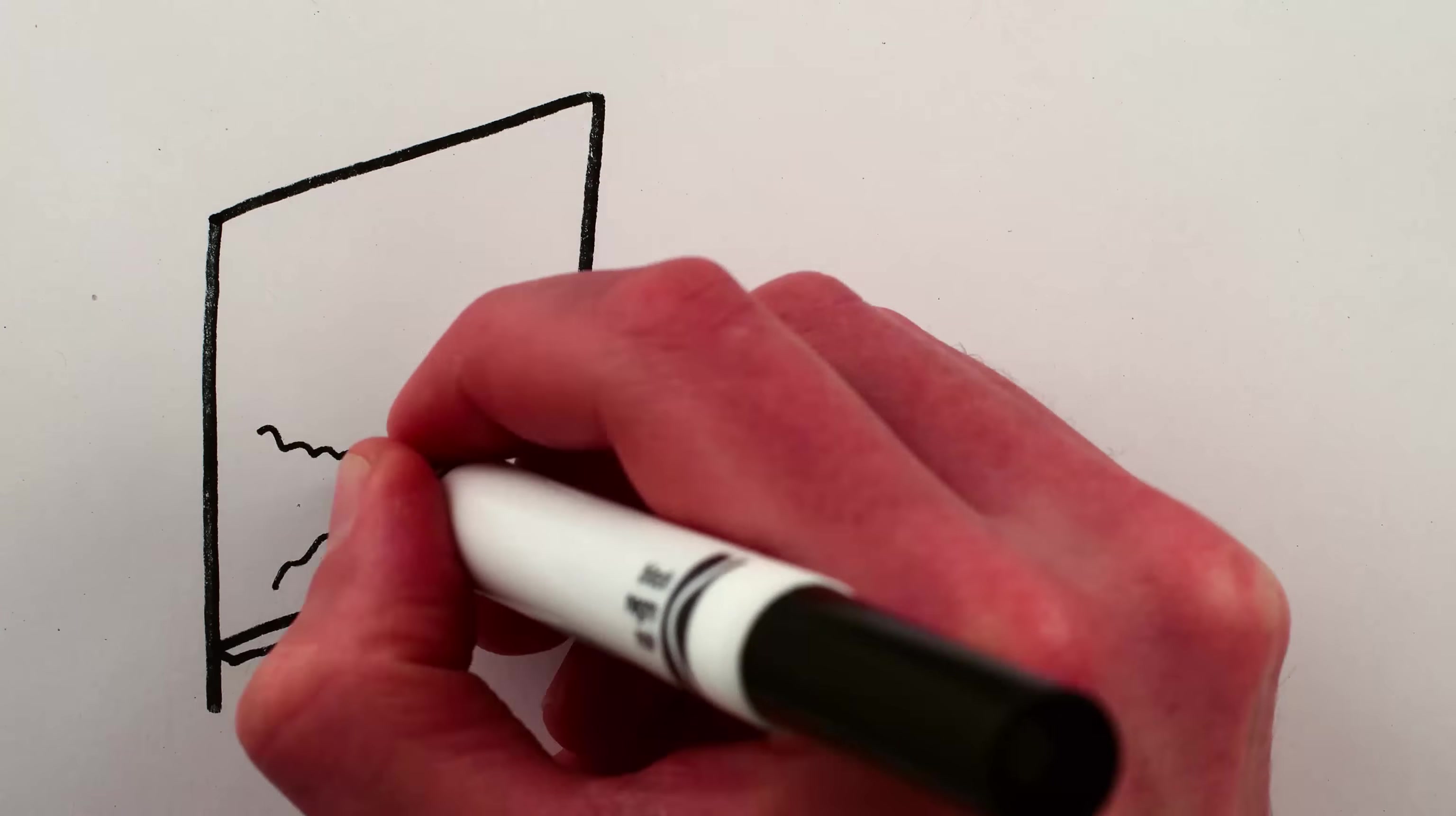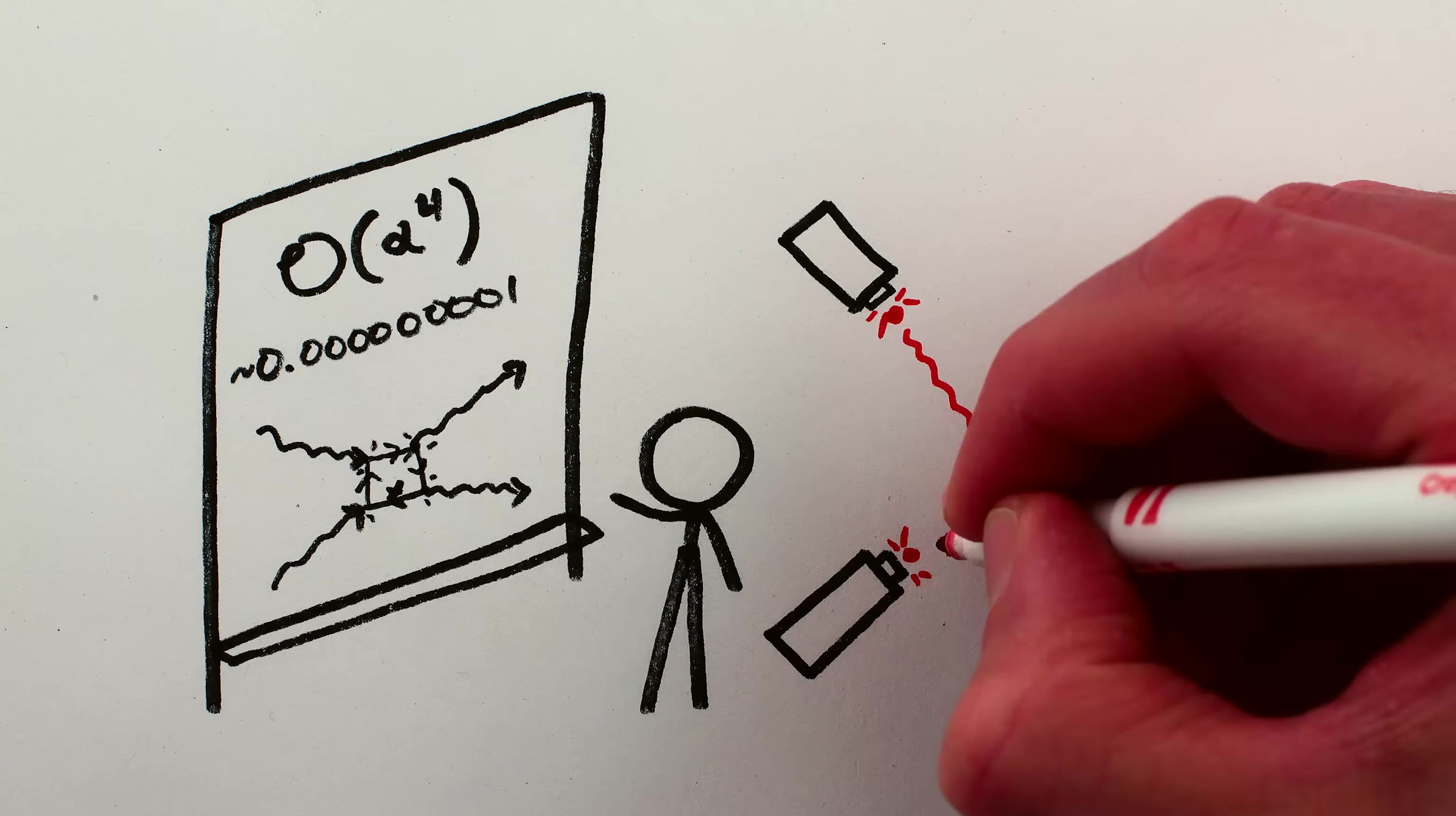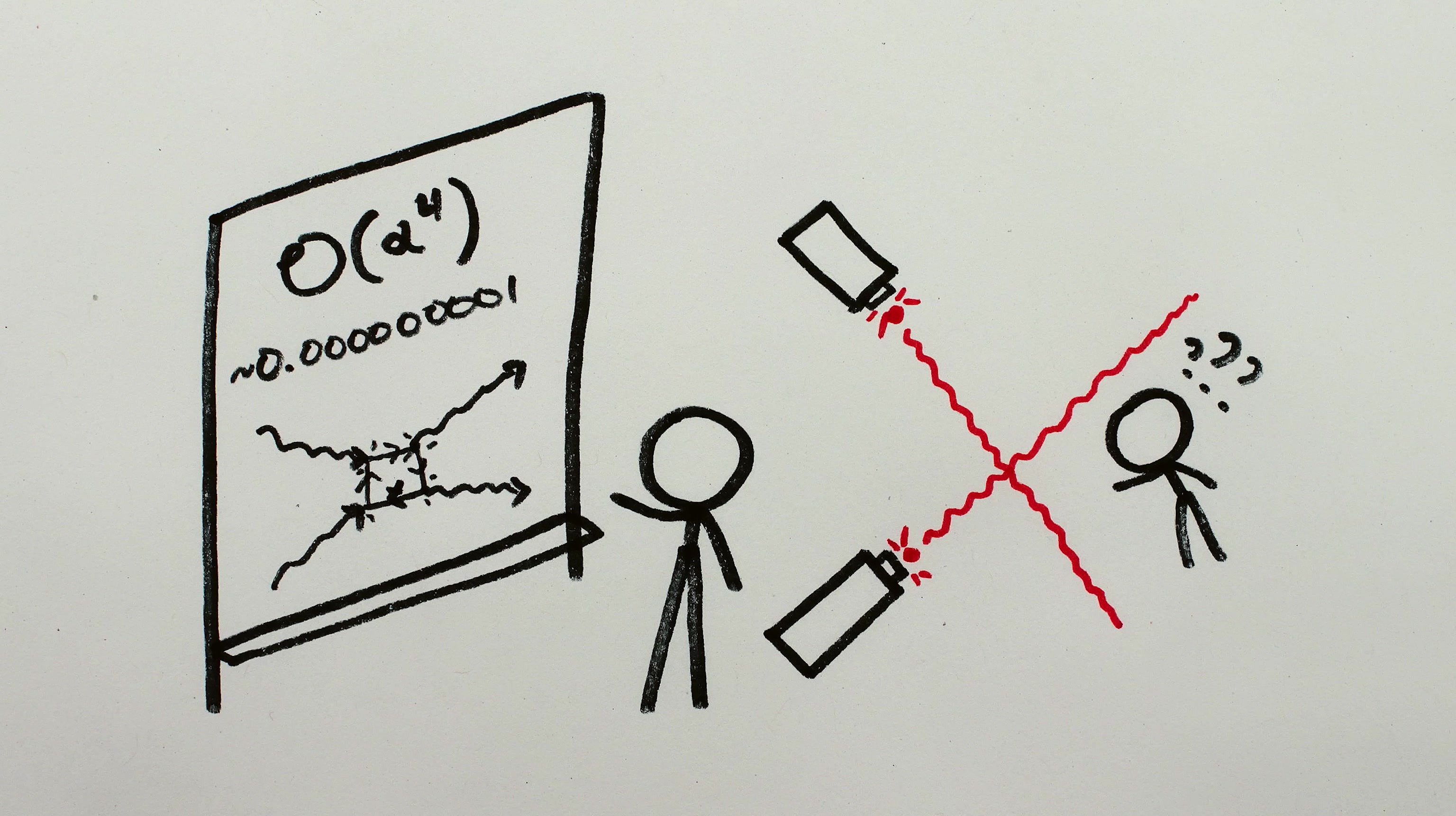Well, photons only bounce off each other exceedingly rarely. Even very carefully controlled experiments with ridiculously high powered lasers have a hard time observing any interaction between photons, which doesn't sound promising for noticing a shadow.